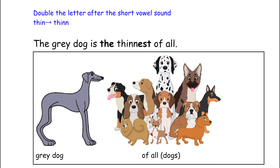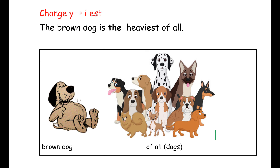Here we need 'thin' — we need two N's. The gray dog is the thinnest of all dogs. Here we need to change the Y to I and add E-S-T. The brown dog is the heaviest of all dogs.